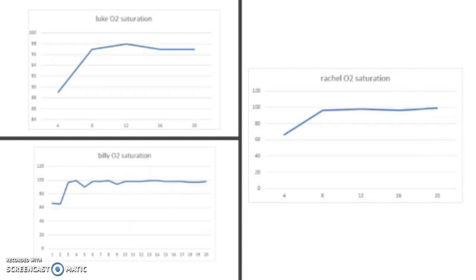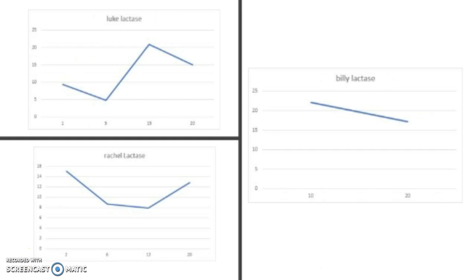When the body starts to exercise, receptors detect changes. The three receptors that come into play are the proprioceptors, chemoreceptors, and baroreceptors. Right as exercise starts, the proprioceptors send an impulse to the cardiac control centre (CCC) and the medulla oblongata. Chemoreceptors detect changes in chemicals — such as decreased oxygen, increased CO2, and lactic acid — and also send a message to the CCC and medulla oblongata. Once chemoreceptors detect a lack of oxygen, a message is sent down the parasympathetic nervous system to increase heart rate.